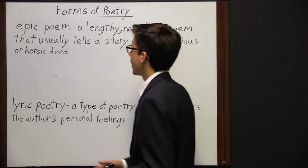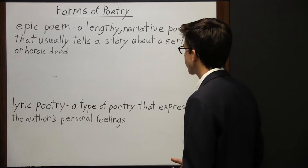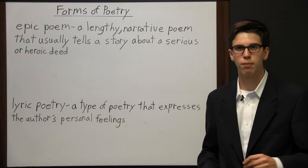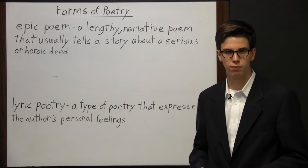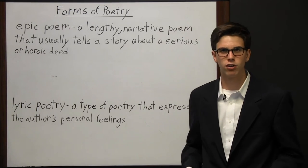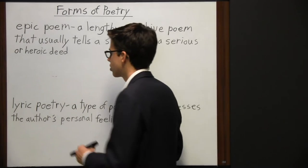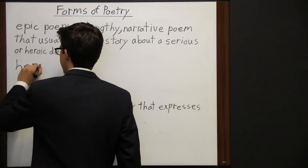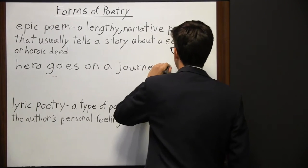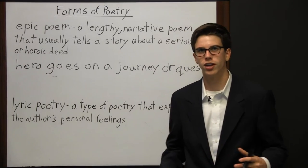Two forms of poetry are the epic poem and lyric poetry. Starting with an epic poem — that's a lengthy narrative poem that usually tells a story about a serious or heroic deed. These types of poems are popular with specific cultures or groups of people. In an epic, the hero tends to go on a journey or a quest, meets many adversaries and enemies along the way, and through each encounter the hero may learn something new. It's through that journey or quest that the hero is overcoming obstacles and learning new things.